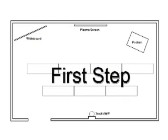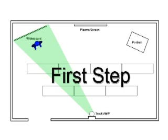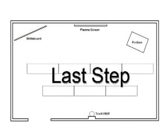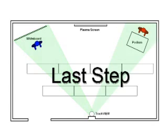First step leaves the camera fixed on the triggered position. In this example, an instructor is stepping on the StepView mat at the whiteboard. Although someone has stepped on another StepView mat, the camera stays on the presenter because he was the first one on a trigger. Last step is a configuration where the last presenter to step on a mat is triggered. In this example, the instructor is again at the whiteboard. However, when the secondary presenter steps onto a StepView mat at the podium, the camera moves to that preset for the podium, because that is the last step.